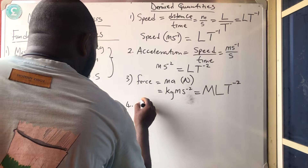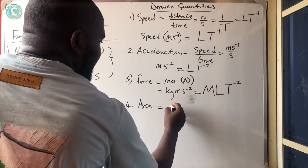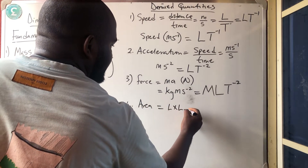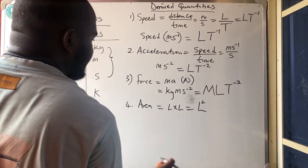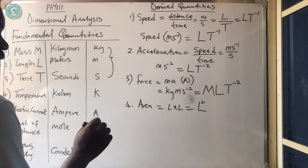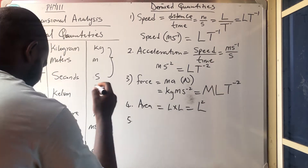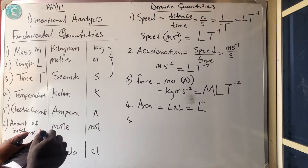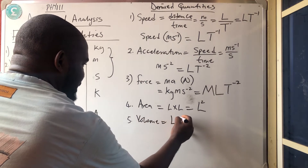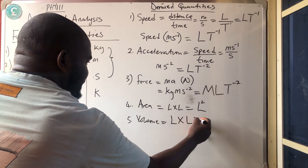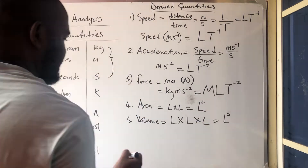Number 4 is area. Area is length times another length, which is L squared (L²) — and don't forget it is measured in meter square. Number 5 is volume. Volume is length times length times length, which is L cubed (L³).